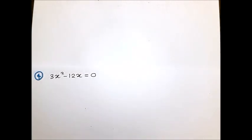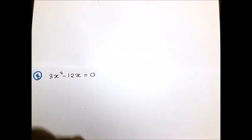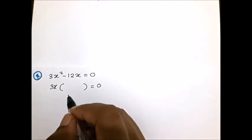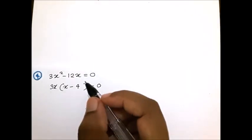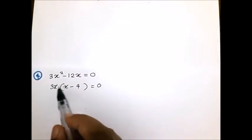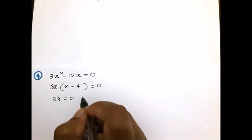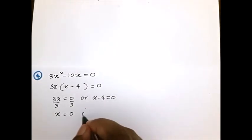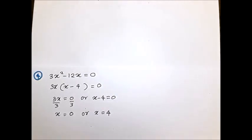Let's start the fourth example: 3x² - 12x = 0. First, factorize this expression. The common terms are 3 and x, so take 3x out. This gives 3x(x - 4) = 0. Now separate: 3x = 0 or x - 4 = 0. Dividing by 3 gives x = 0. Taking -4 to the right gives x = 4. The solution is x = 0 or x = 4.